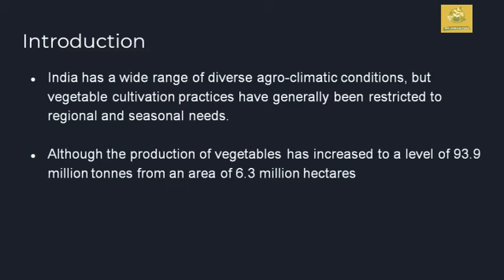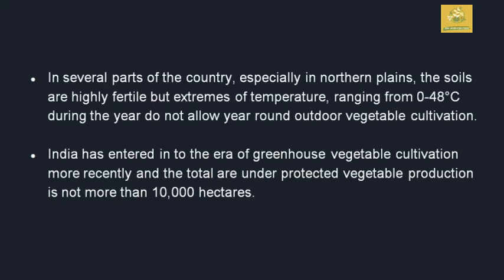I will give a short intro about horticulture crops and their productive cultivation. In India, there is a wide range of diverse agro-climatic zones. Productive cultivation has increased up to 93.9 million tons from an area of 6.3 million hectares from the year 2001. In several parts of the country, especially the northern plains, the soils are very highly fertile, but because of extreme temperatures ranging from 0 to 48 degrees Celsius, cultivation all around the year is certainly impossible. So outdoor vegetable cultivation was not occurring all around the year. India has entered into greenhouse vegetable cultivation most recently, and total greenhouse cultivation is not more than 10,000 hectares at present in India.